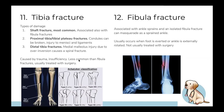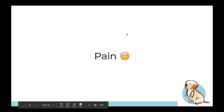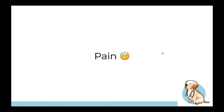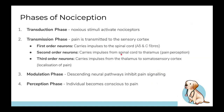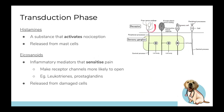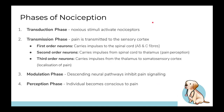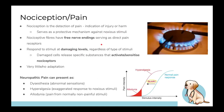Now let's cover the pain content. Nociception is the detection of pain — an indication of injury or harm, serving as a protective mechanism against stimuli. Nociceptive fibers have free nerve endings which detect sensory stimulation quickly. They respond at damaging levels and use a different pathway to the brain, kept separate from other kinds of sensation.